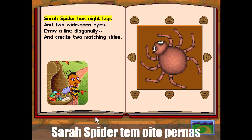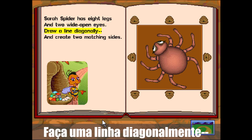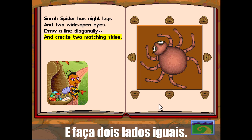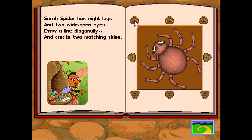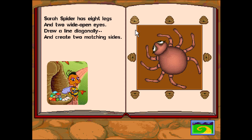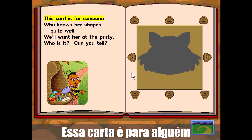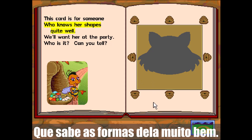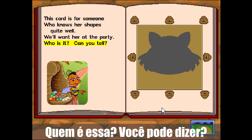Sarah's spider has eight legs and two wide open eyes. Draw a line diagonally and create two matching sides. This card is for someone who knows her shapes quite well. We'll want her at the party. Who is it? Can you tell?